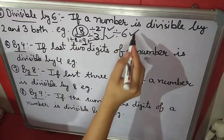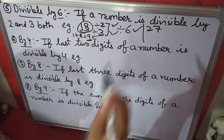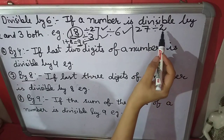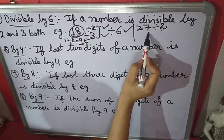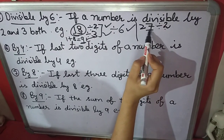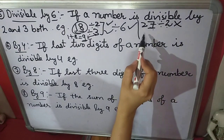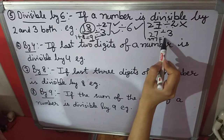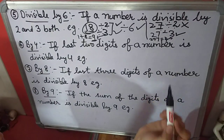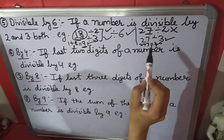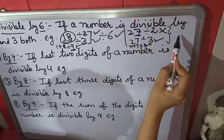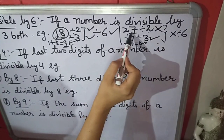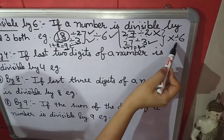Another example: 27. Check if it is divisible by 6. First, check divisibility by 2 — the 1's place is 7, which is not 0, 2, 4, 6, or 8, so it is not divisible by 2. For divisibility by 3, we add 2 plus 7 equals 9, and 9 is divisible by 3. So 27 is divisible by 3 but not by 2. Since it must be divisible by both 2 and 3, it is not divisible by 6.